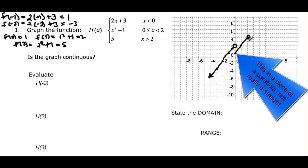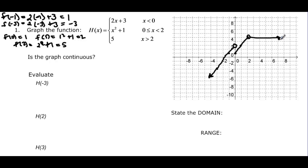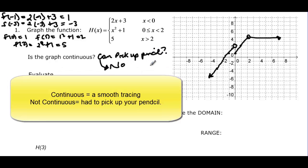The next piece is the constant 5, whenever x is greater than 2. It doesn't include 2 — it starts at 2 and goes forever at the value of 5. The arrows tell me it keeps going forever. Is the graph continuous? You ask yourself: can you pick up your pencil? If you can, then it's not continuous. Anytime there are gaps in your graph, it's not going to be continuous.